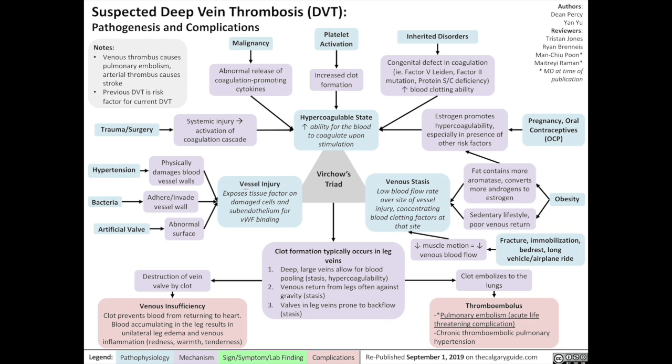The three factors of Virchow's Triad are: first, injury to the blood vessel; second, a hypercoagulable state of the blood; and third, venous stasis.